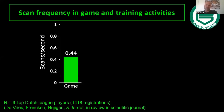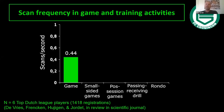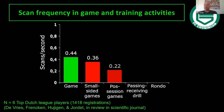We did a study with FC Groningen's first team and looked at scan frequency in games versus different practice activities. In games, these six players had a frequency of 0.44 — roughly average. In small-sided games it was 0.36; possession games 0.22; passing-receiving 0.12; and rondo 0.03. These training exercises produce much less scanning than what you see in games. This doesn't mean rondo is a bad exercise — I think it's fantastic — but it does not exercise scanning behind your back. For coaches, it's important to be aware of what each exercise contributes toward the end product we want in the game.